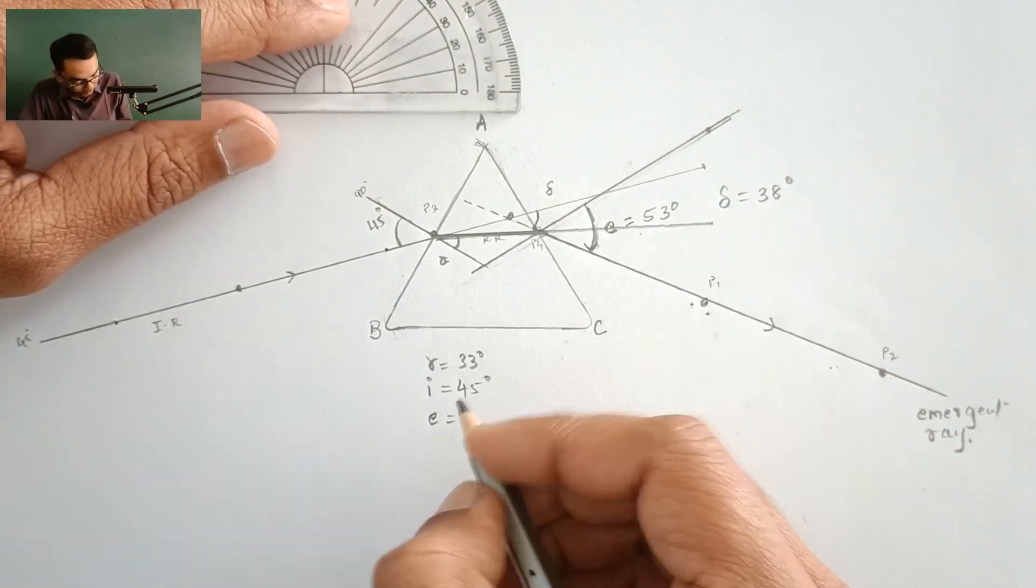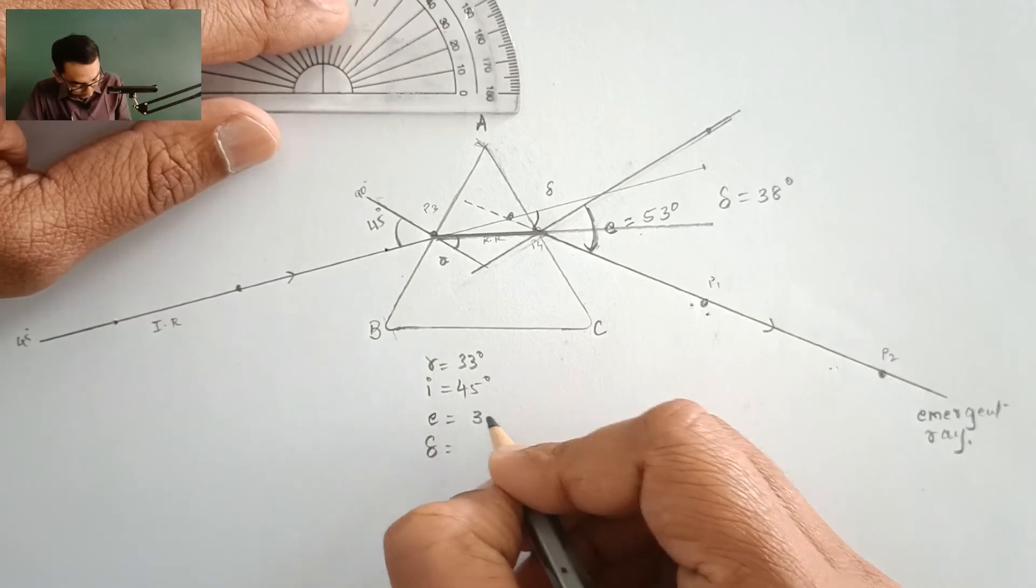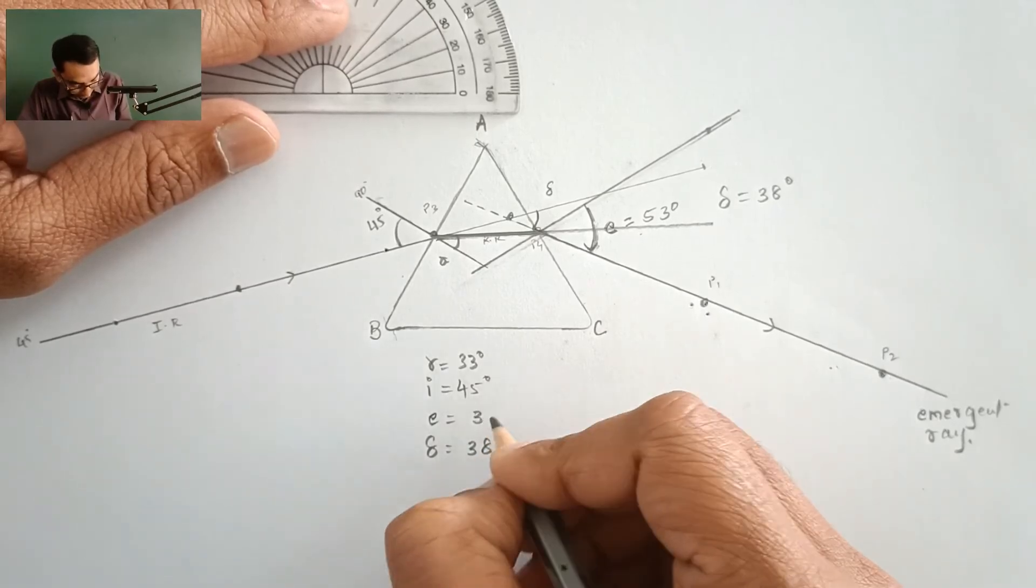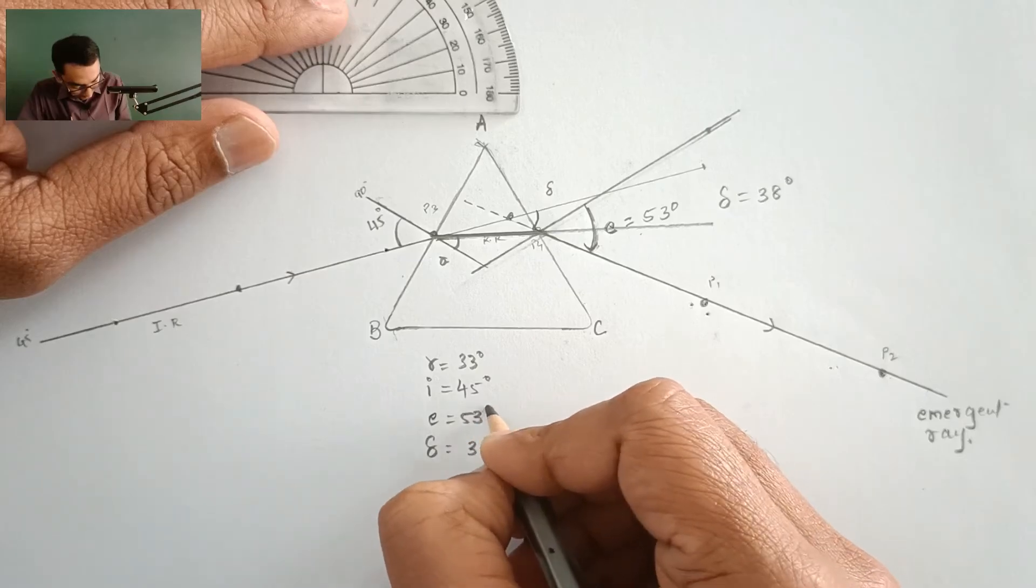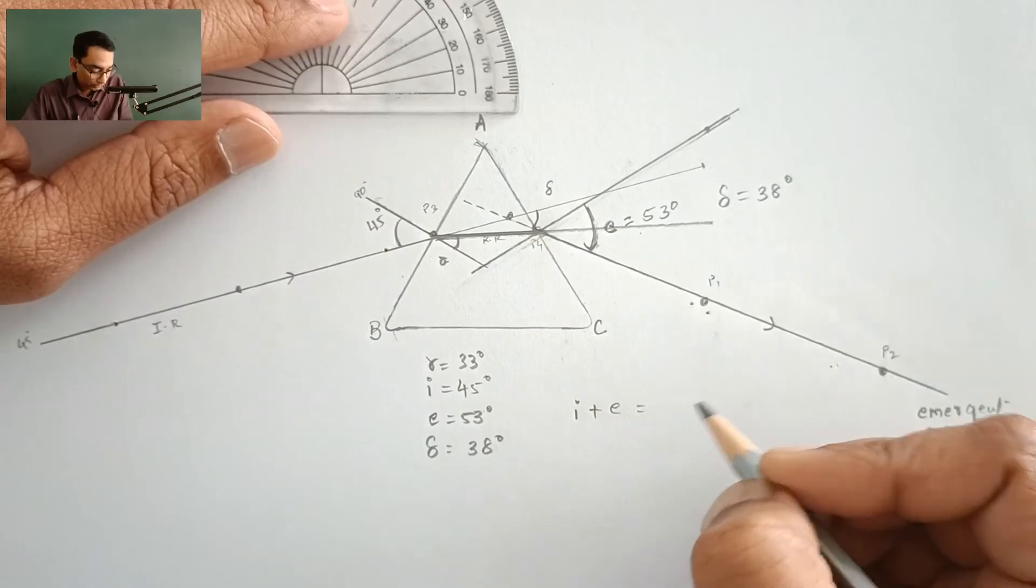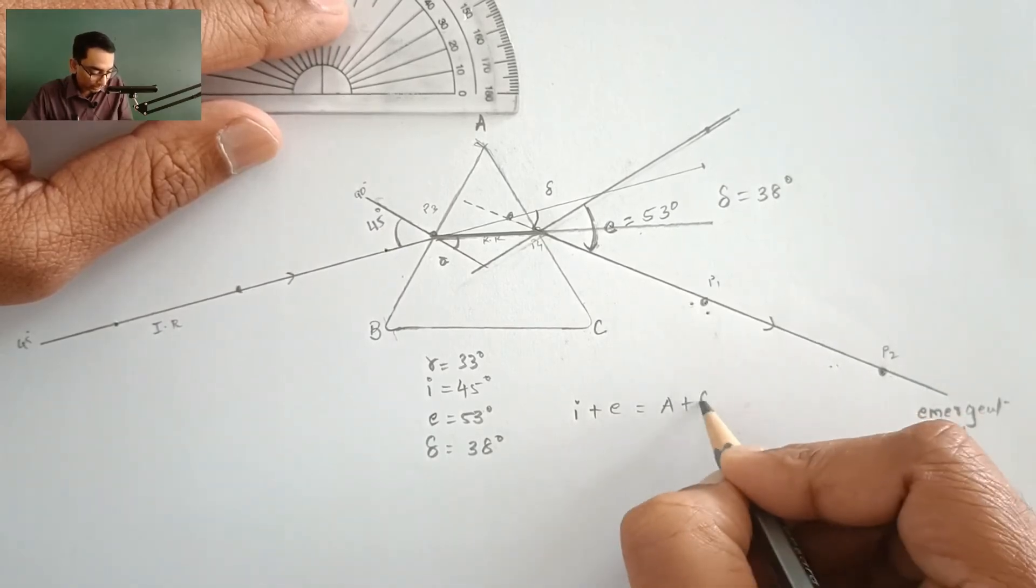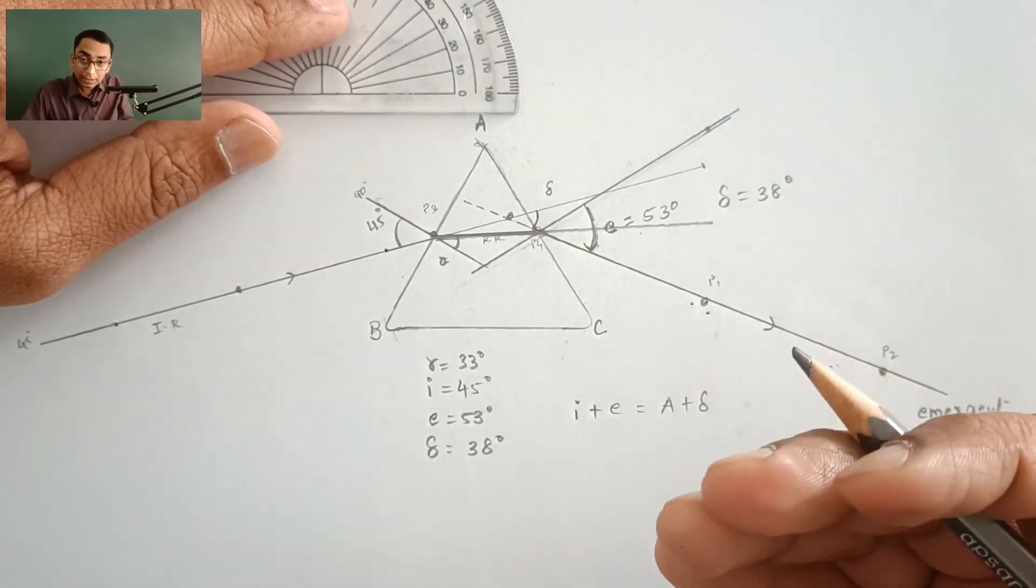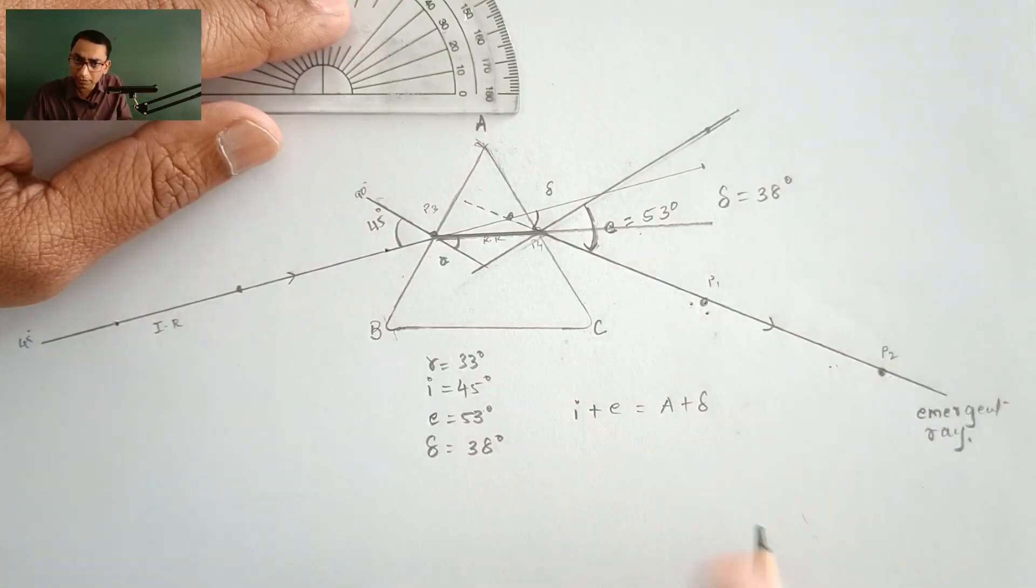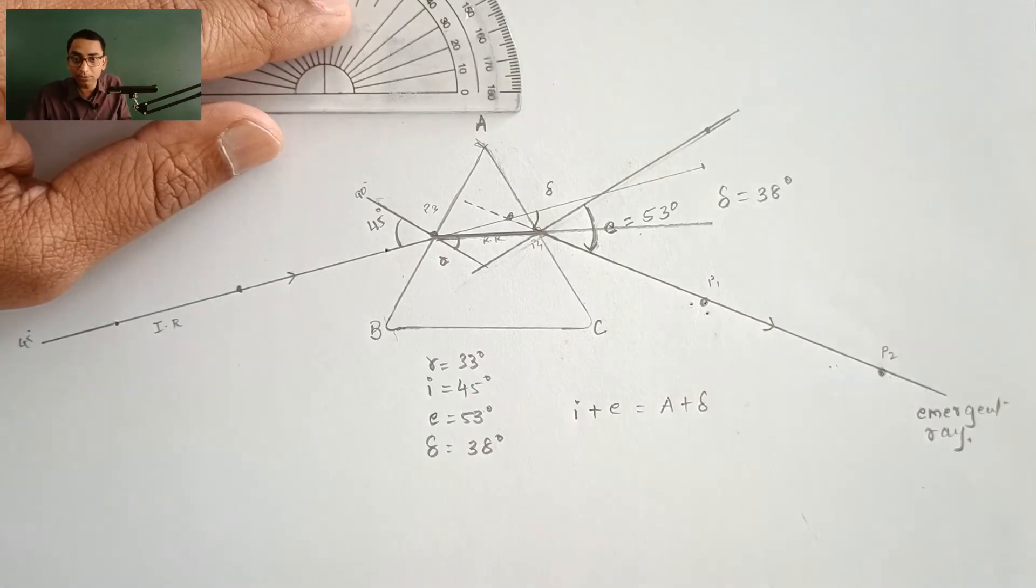The angle of emergence and deviation are as follows, this is 38 degrees and this is 53 degrees. Now I plus E should be equal to A plus delta, but since we are doing the experiment, there can be a human error of about 1 or 2 degrees. That is perfectly fine, you need not to exactly make them equal.